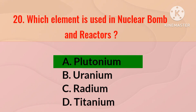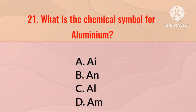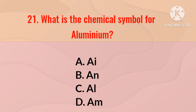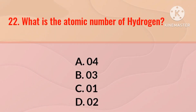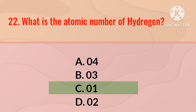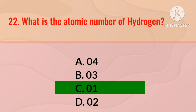Which element is used in nuclear bombs and reactors? The right answer is plutonium. What is the chemical symbol for aluminium? The right answer is Al. What is the atomic number of hydrogen? The right answer is 1.